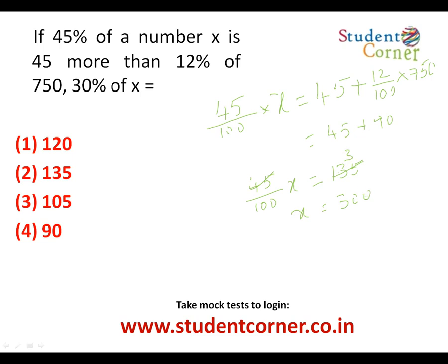The question asks for 30% of X. So 30% of 300: the zeros cancel and the value is 90. We can also verify using options: if 30% is 90, then 100% is 300. Checking: 45% of 300 is 135, which matches. So the answer is 90.